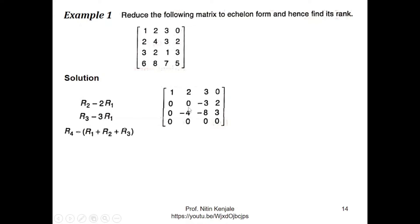Finally I see element at position a22 is 0. So to get a nonzero element over there we will swap row 2 with row 3. So we get this matrix.